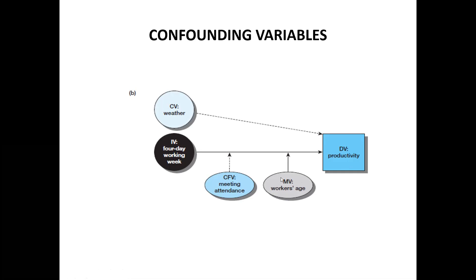Now the next variable type is the confounding variable. One such variable in our example is meeting attendance. This variable affects the relationship, but it is different from the moderating variable. The moderating variable is supported by previous literature — when you review previous literature, you can see that it suggests a variable can act as a moderating variable.